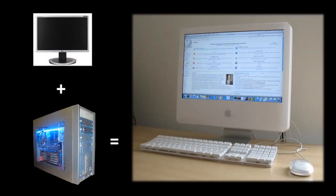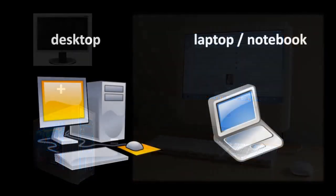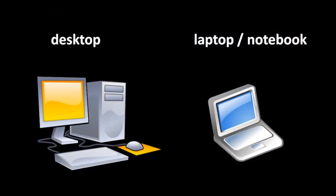Confusingly, however, there are examples where a monitor and a computer are housed together in one unit. For example, Apple sells a line of computers called iMacs. And also, a laptop is a system where the monitor and the computer have been housed together in one physical unit.